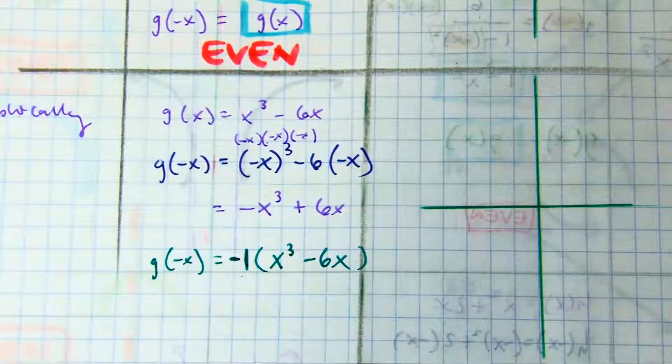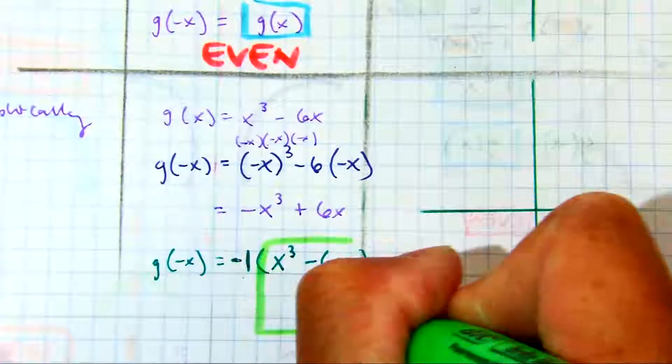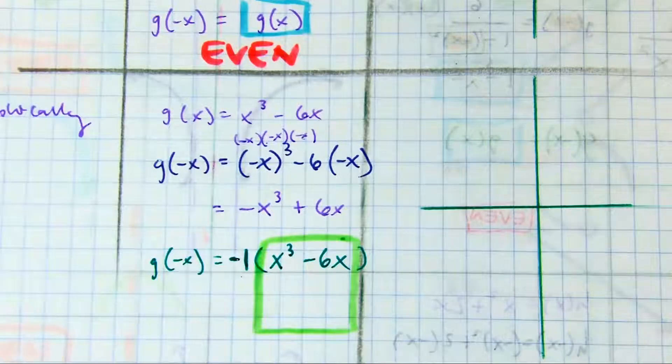Caesar, I see x cubed minus 6x. What can I write there?